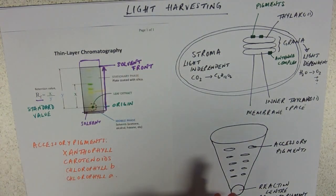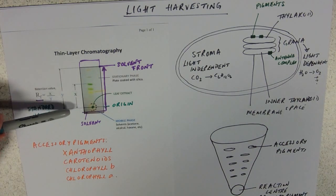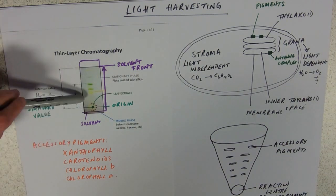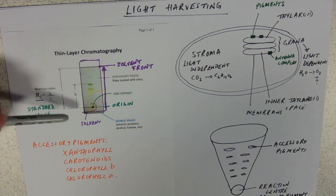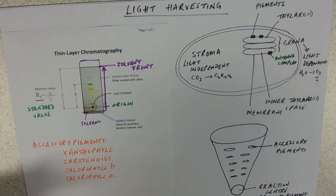You calculate this Rf value, which is a ratio—no units. For each one of these, you measure how far it's gone in the solvent, how far that component has gone, and divide it by how far your solvent has traveled. That gives a standard value for particular solvents. It doesn't matter how big your chromatogram is; that ratio is going to be constant, which is why it's a ratio. You'd need to do five different Rf value calculations to identify which of the pigments is which.